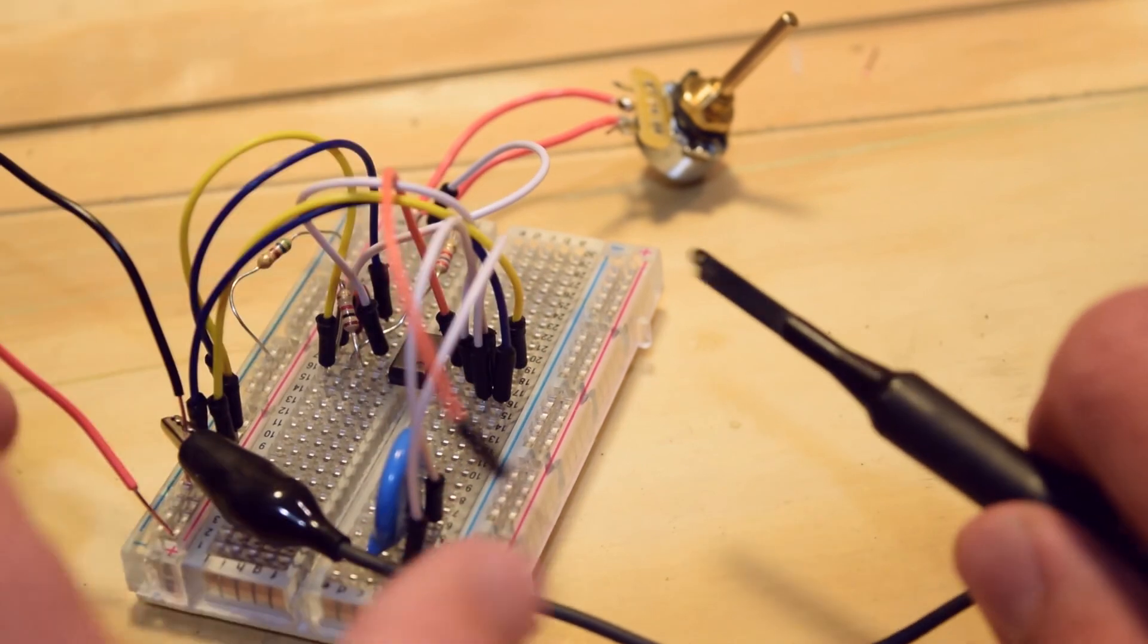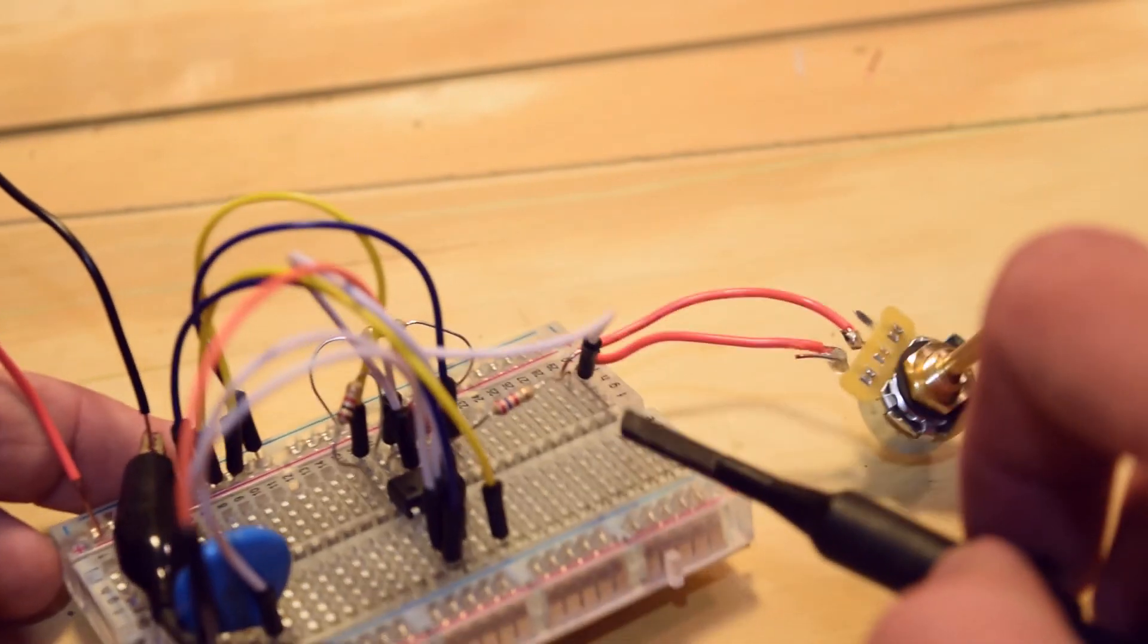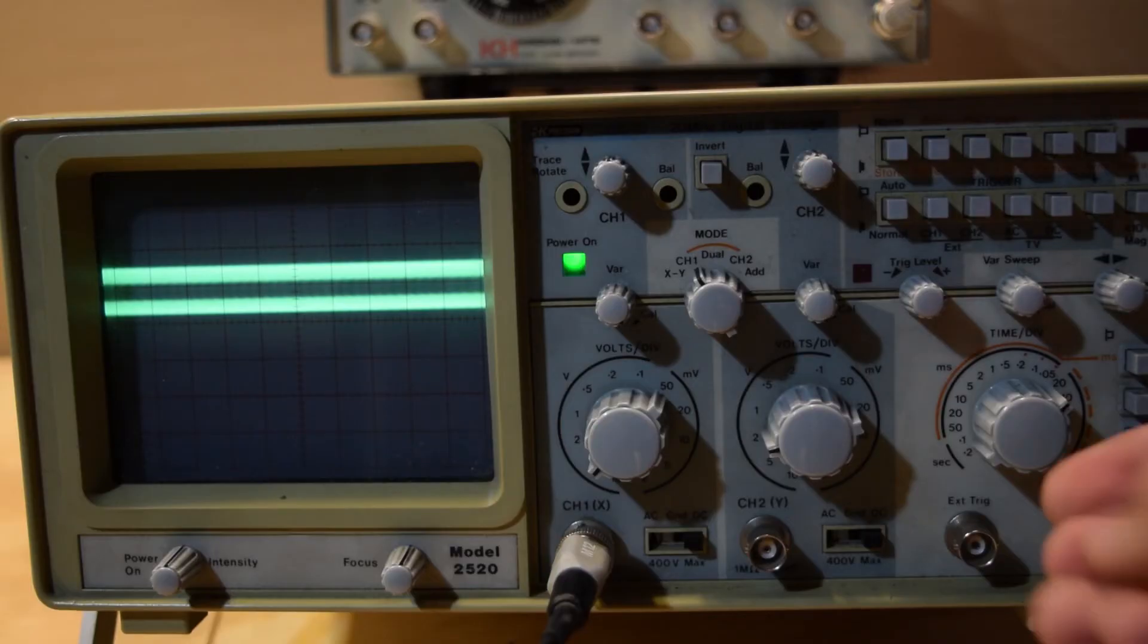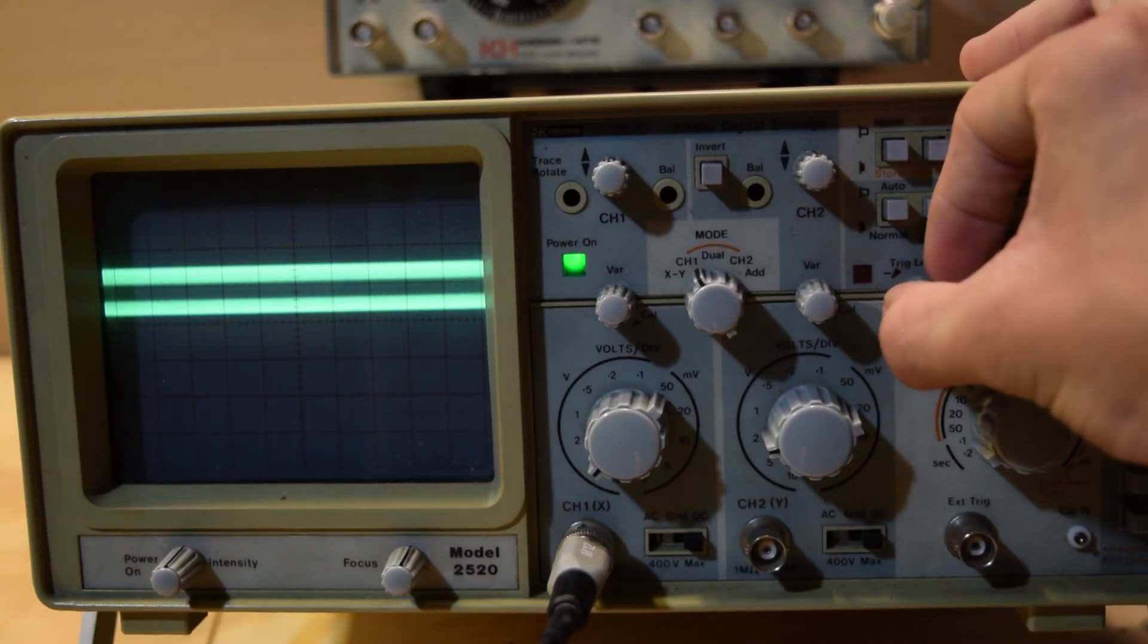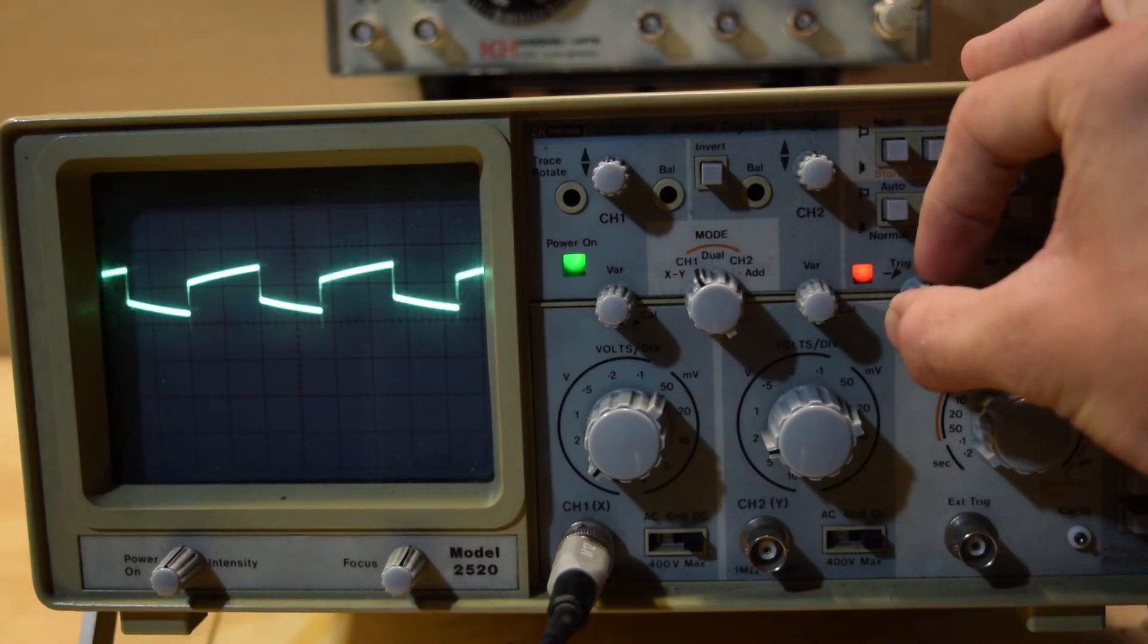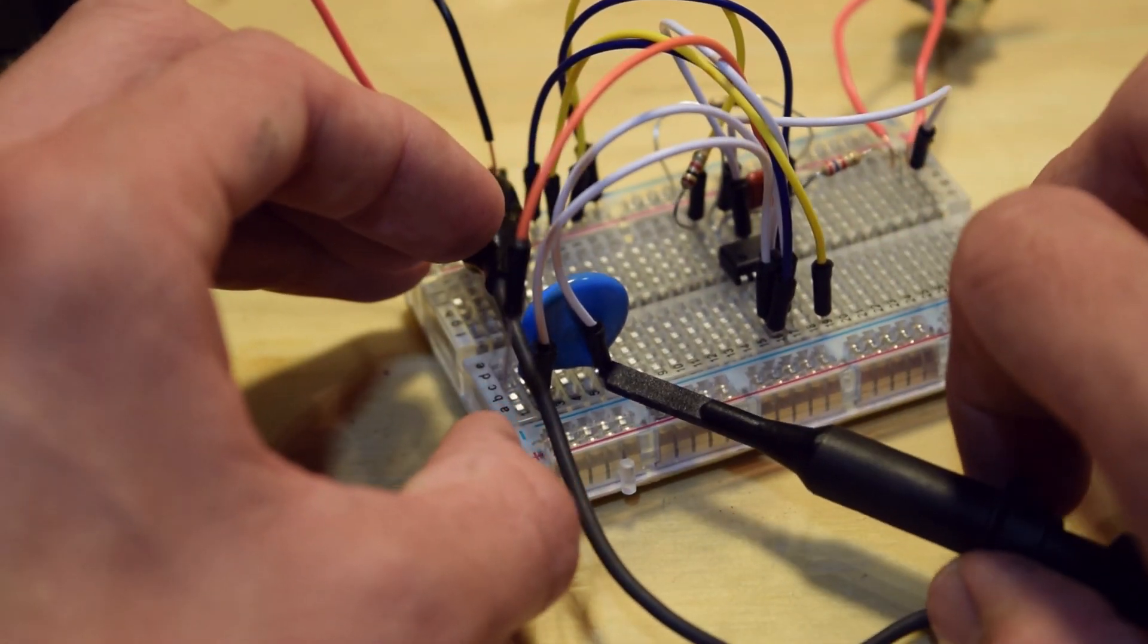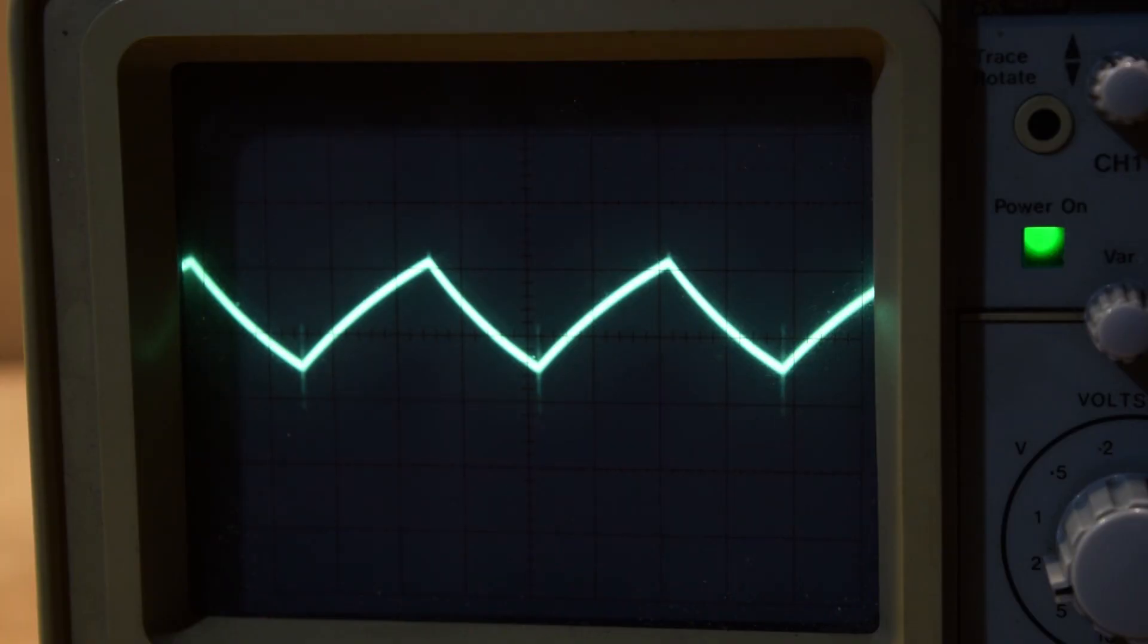Now I'm just going to probe around in some other spots in this circuit and see what signals we can find. I'm connecting to the end of this resistor here. Now all I really need to do is adjust the trigger level and there it is. Let's connect to something else. I'm going to look at the output of this 10 nanofarad capacitor. You can see that the capacitor is charging up to a certain point and then discharging.